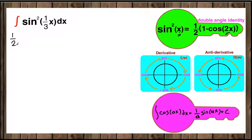It's going to be 1/2, which we can pull to the front of the integral sign, times the integral of (1 - cos(2/3 x)) dx. We're multiplying this angle by 2, which gives us 2/3 x.